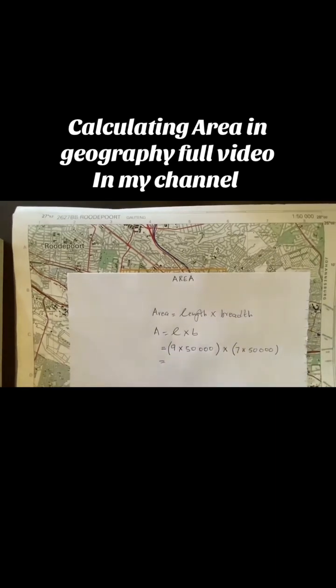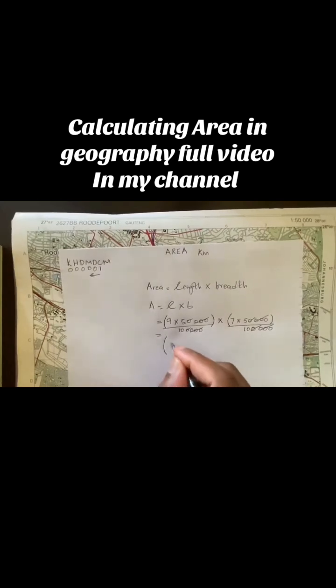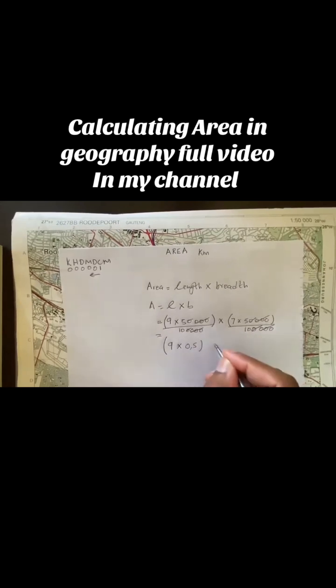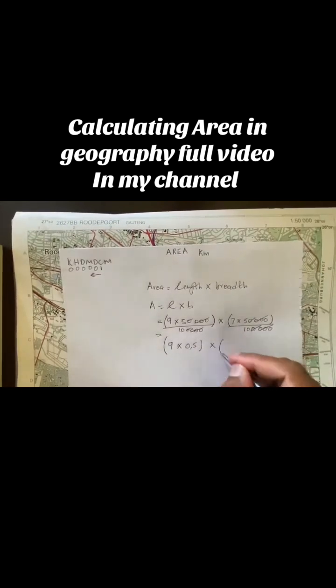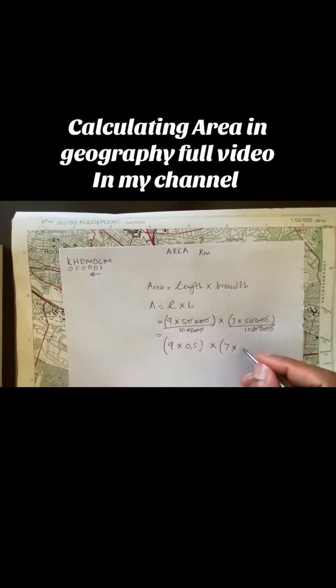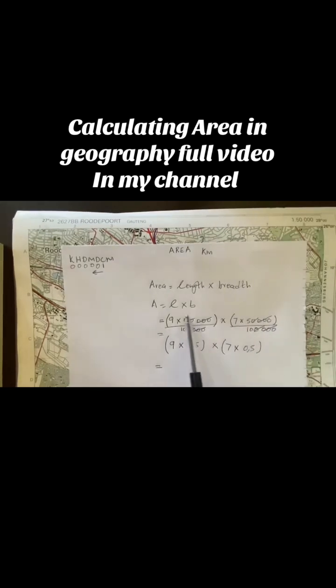When we are at the scale, from here I can do my calculations on my math. This will be 9.5 divided by 10 will be equals to 0.5. And this side, 7 times 5 divided by 10 will be 0.5. So basically, I just took my 50,000 centimeters, divided it by 100,000, because I'm converting these 50,000 centimeters to kilometers. So if I divide 50,000 by 100,000, this is 0.5 kilometers, and also this side.